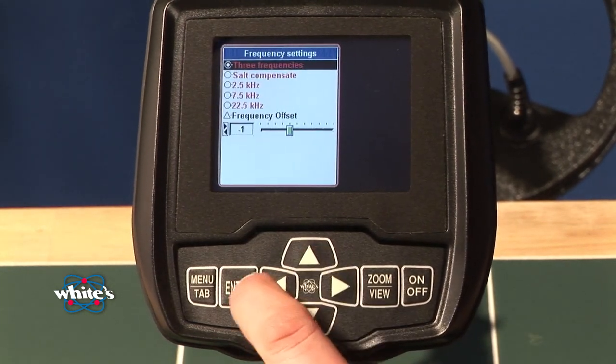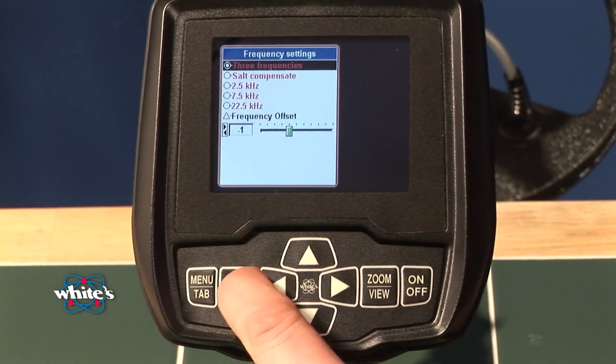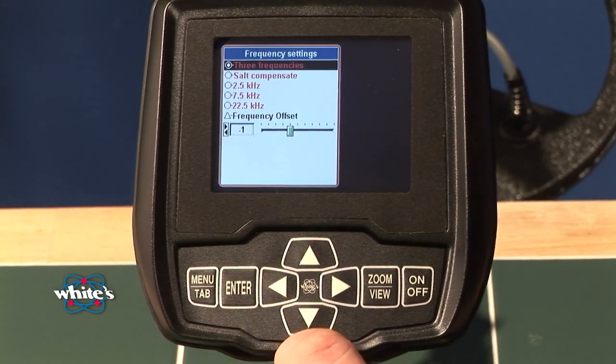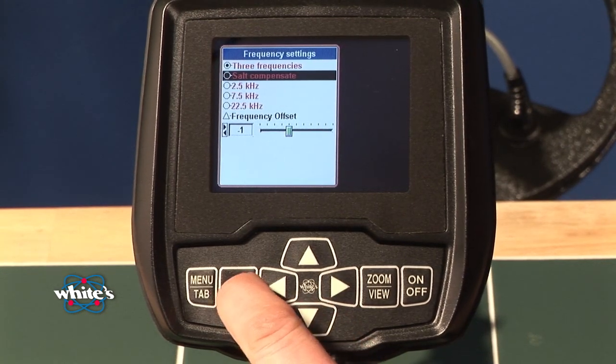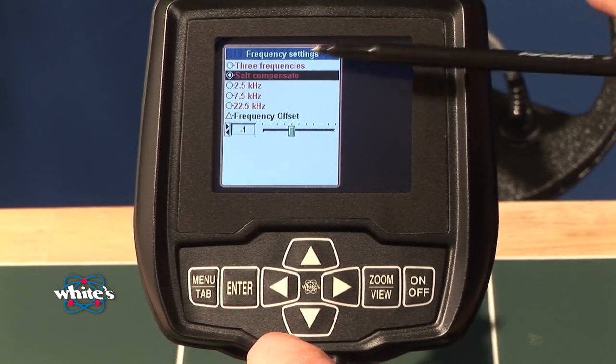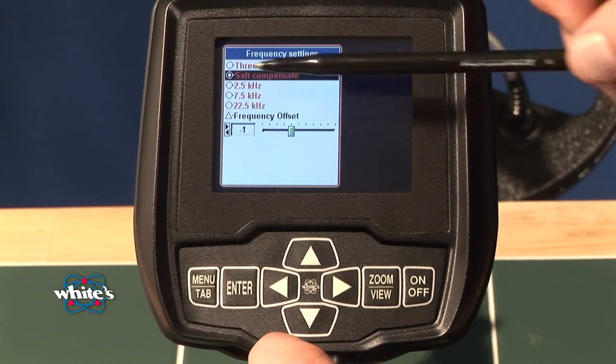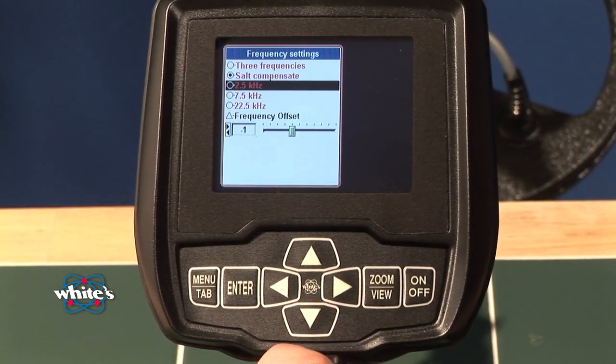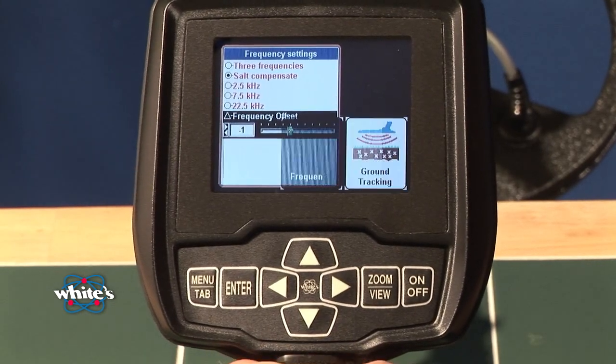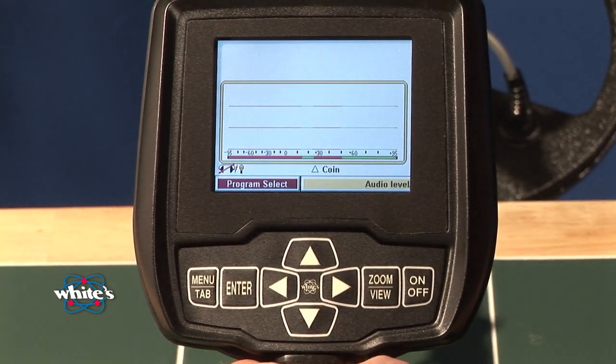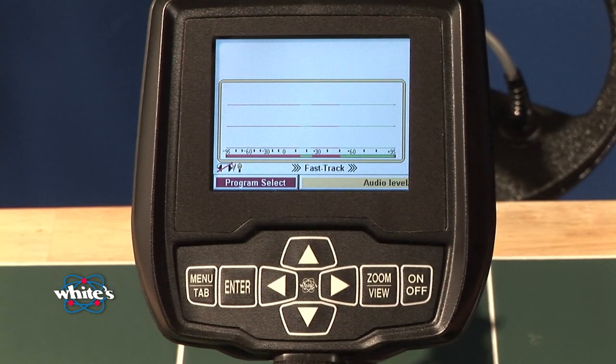In the multi-frequency methods, if I enter that, that's going to give me that particular method. You can see the dot. It's giving me three frequencies. Here I'm going to enter the salt compensate, so the little fill-in is telling me which of these programs or which of these settings I'm using. Squeeze and release the trigger again once to the six-block menu, twice to go to the search screen.